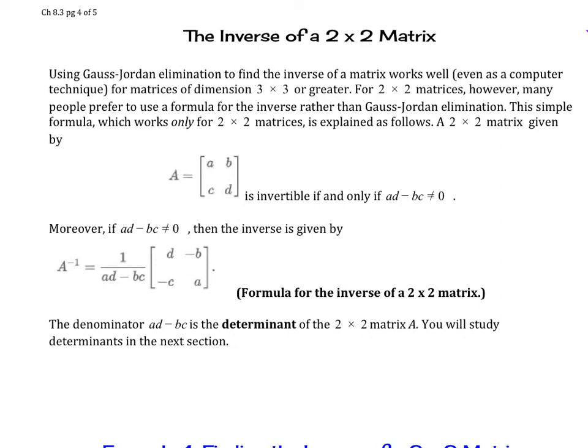The inverse of a 2 by 2 matrix. Using Gauss-Jordan elimination to find the inverse of a matrix works well, even as a computer technique for matrices of dimension 3 by 3 or greater. For 2 by 2 matrices, however, many people prefer to use the formula for the inverse rather than Gauss-Jordan elimination.